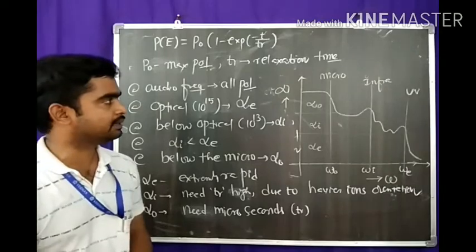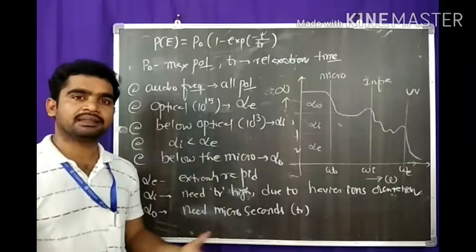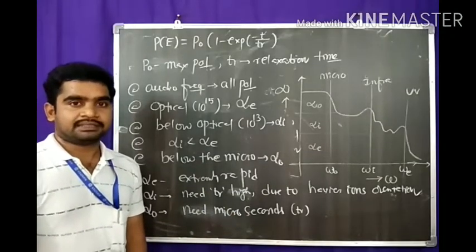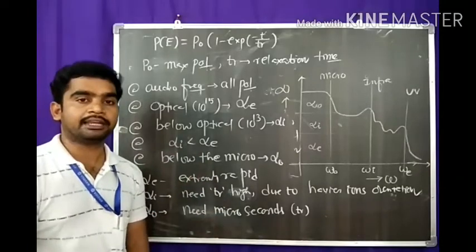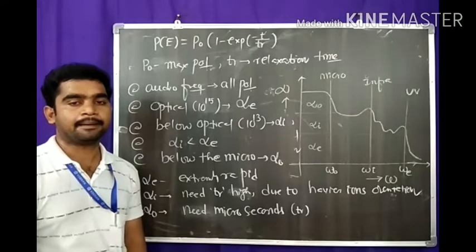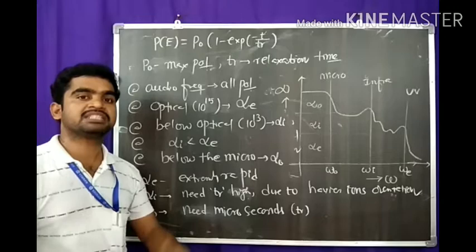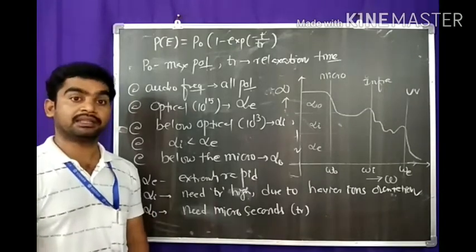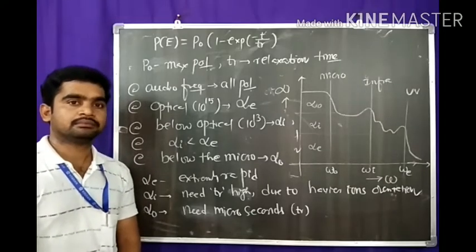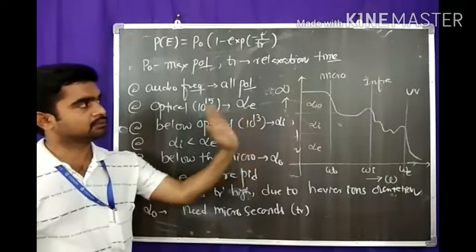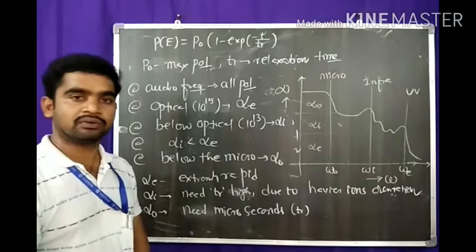Coming to orientational polarization, it is possible only up to the microwave region. In this case, dipoles are reoriented in the applied field direction, but we need much more time than ionic polarization — in nanoseconds or microseconds. So orientational polarization is only possible up to the microwave frequency range.